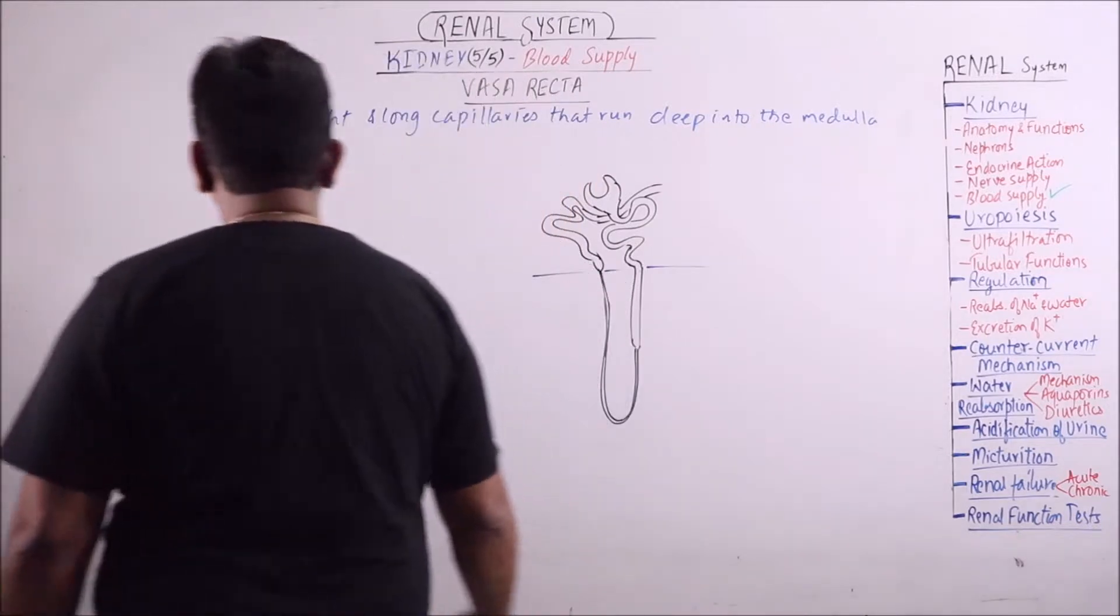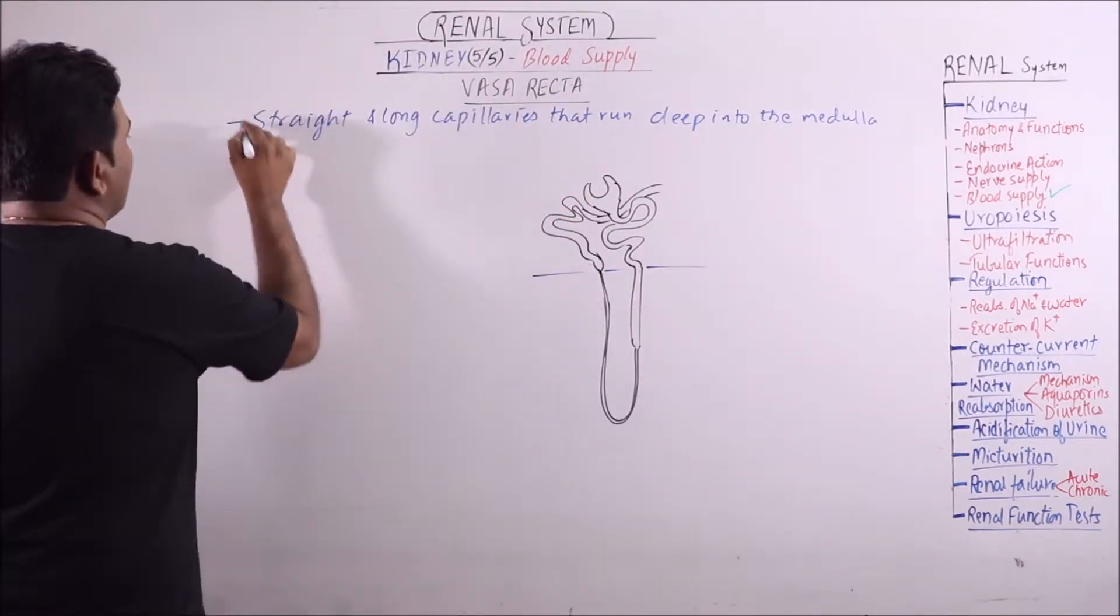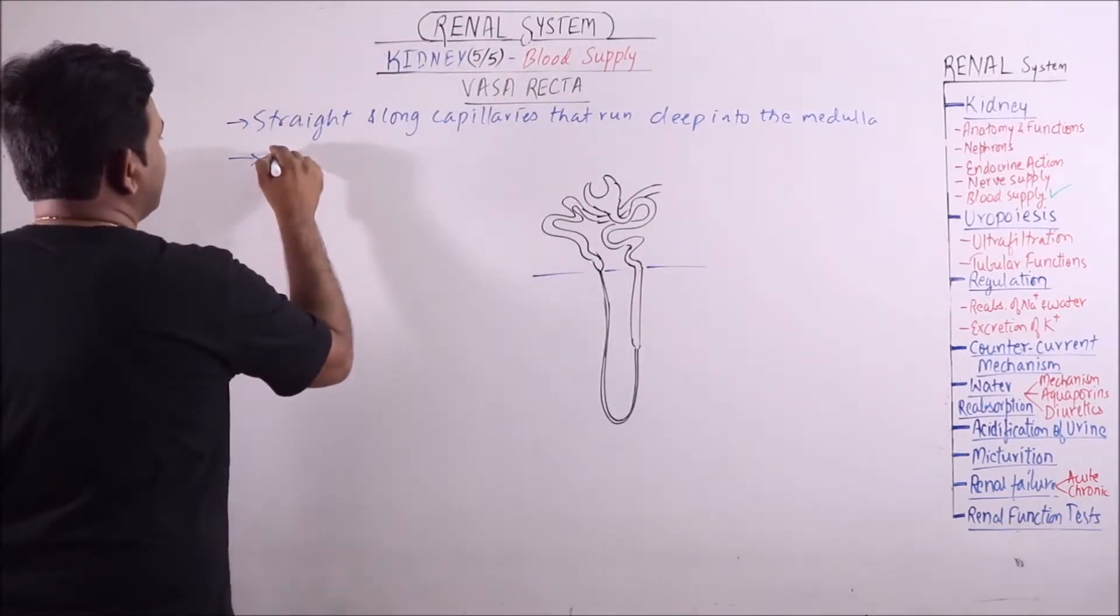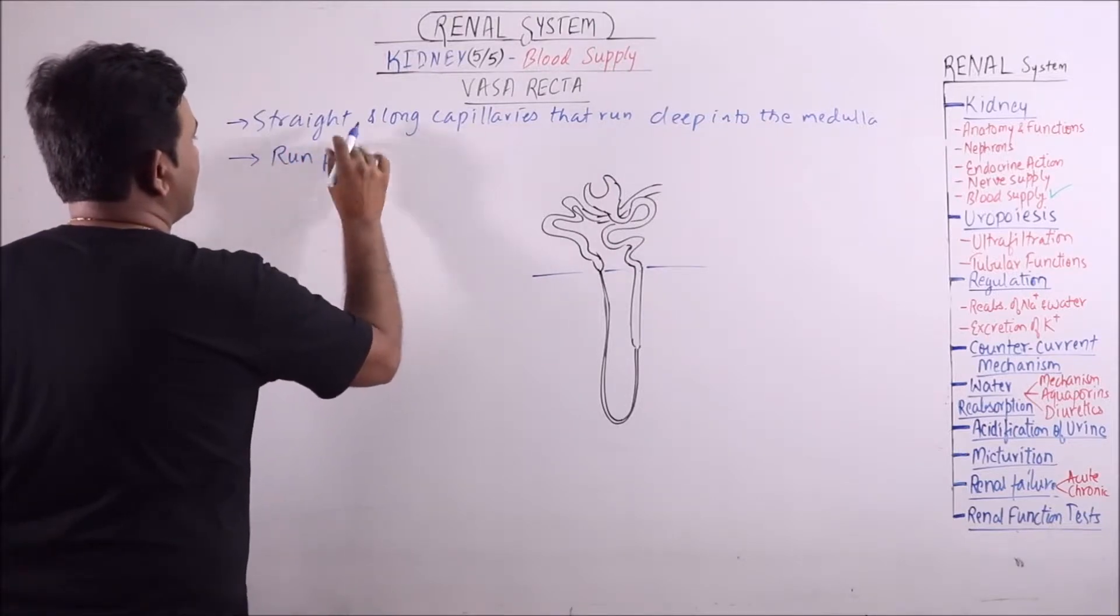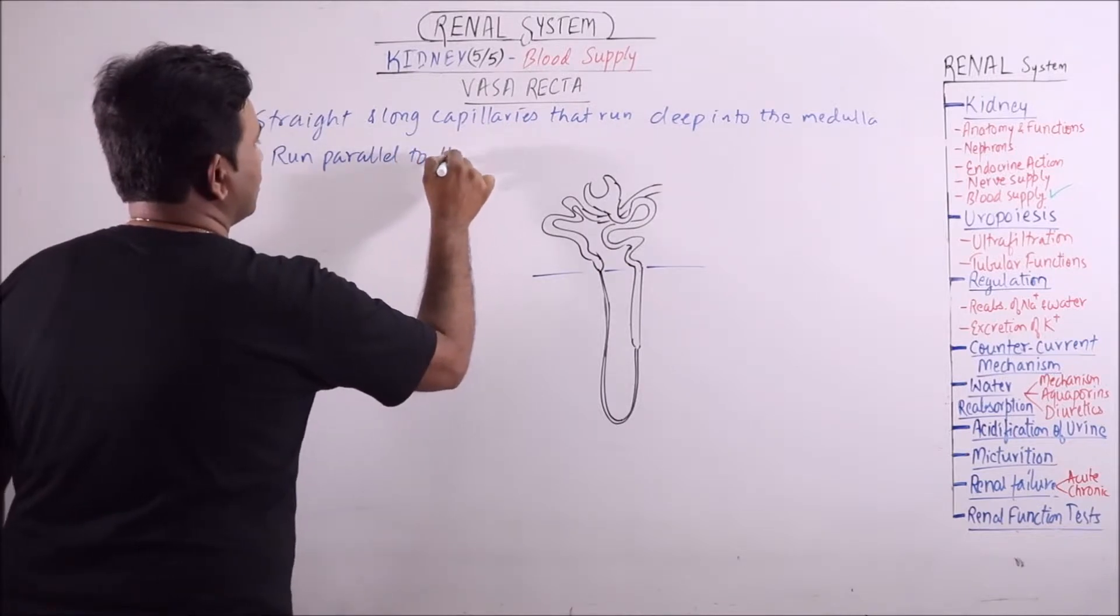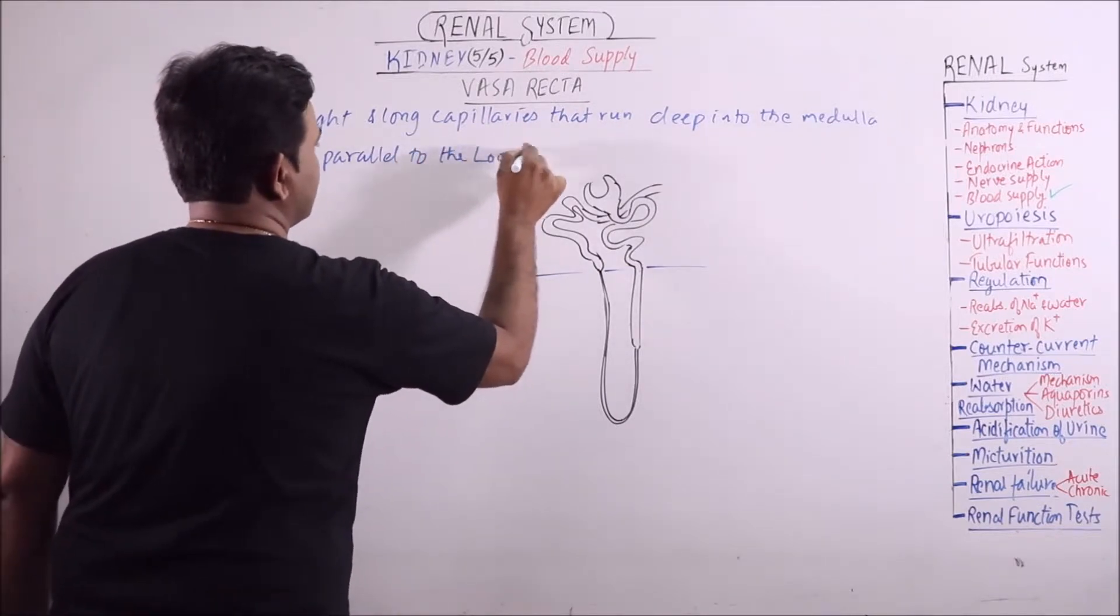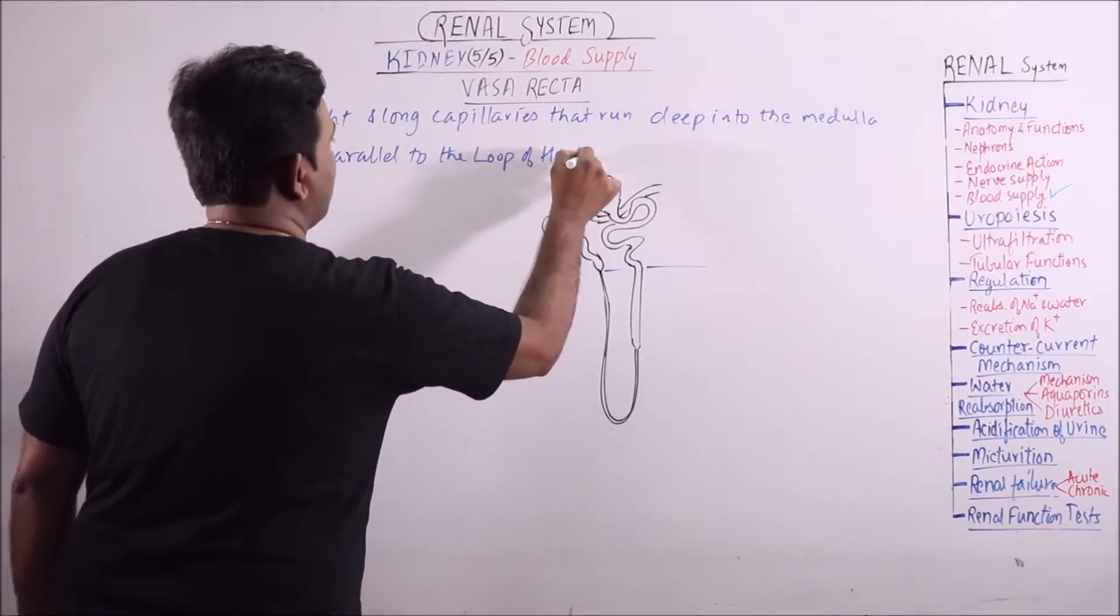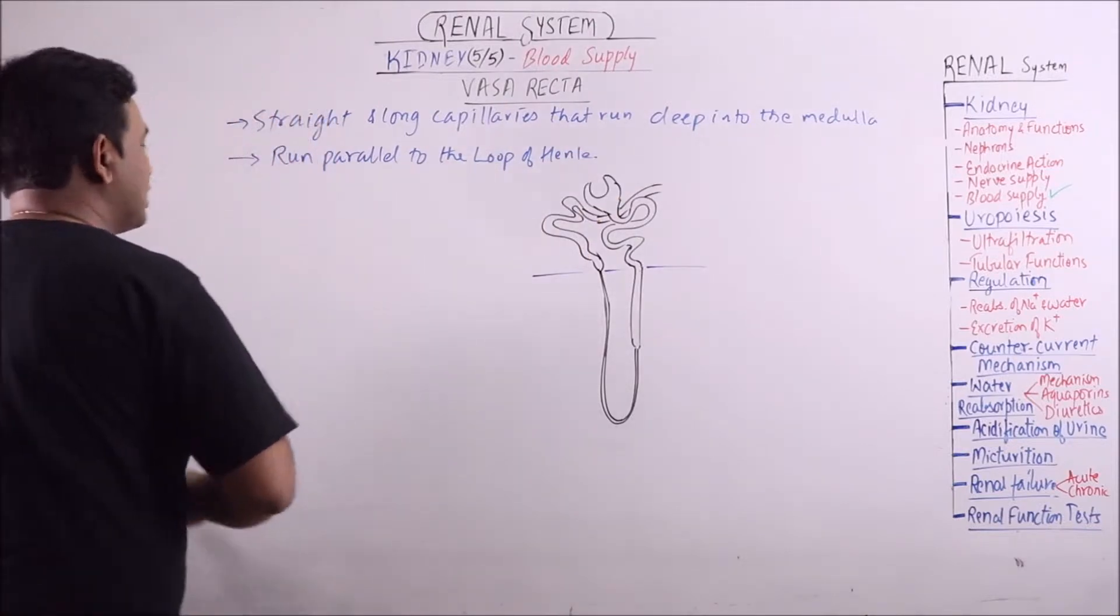Now the important thing is that these run parallel to the loop of Henle, better to say antiparallel.